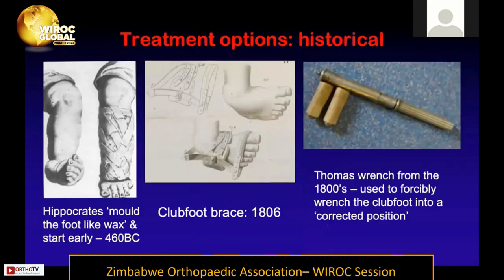Historically, looking at various treatment options in the literature, from Hippocrates who described molding the foot gently almost like wax, to the 19th century when clubfoot braces became popular — the Thomas wrench was actually used to forcibly correct the clubfoot. This shows how over the centuries treatment evolved from being gentle, to forcible, and back to understanding the importance of being really gentle when treating clubfoot.